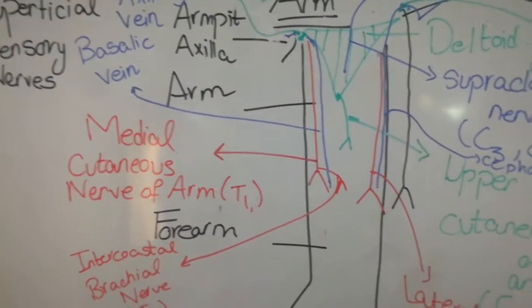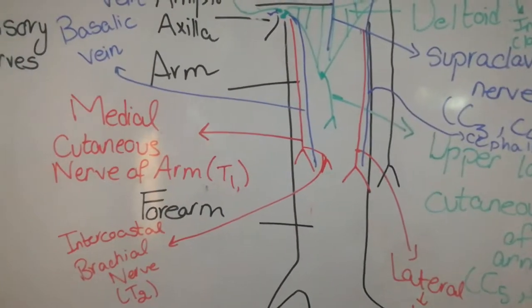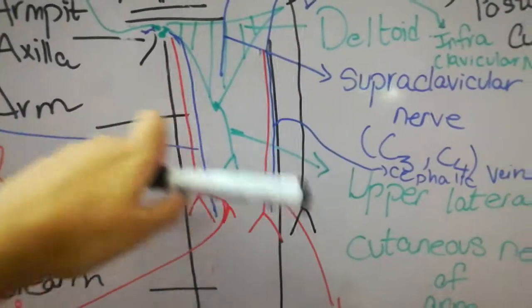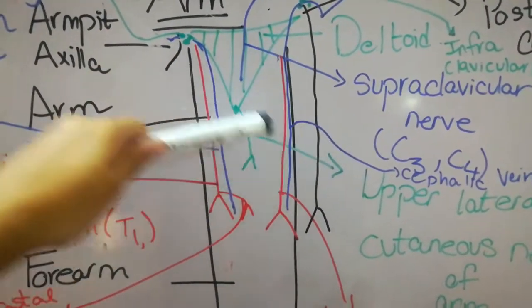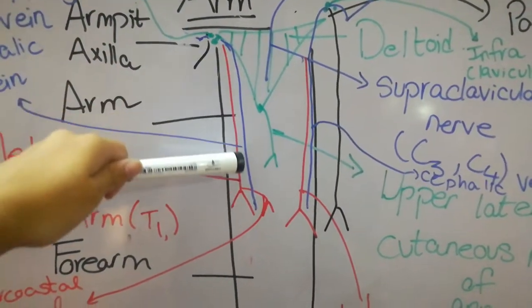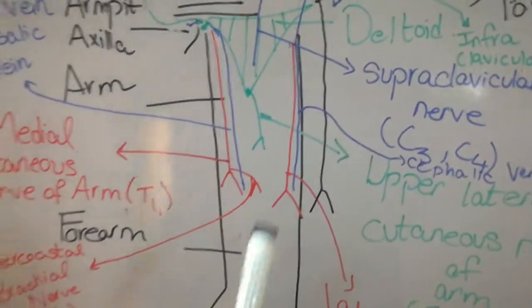What we're going to discuss more is the superficial veins that lie in the superficial fascia, comprising of two types. One is the cephalic vein, shown with the blue color, and one is the basilic vein, shown with this blue color line.